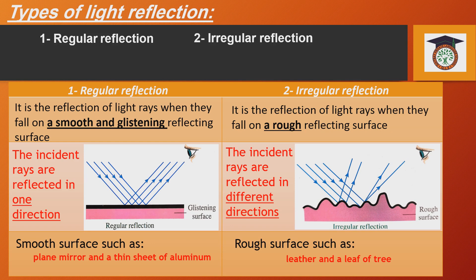So, to summarize, we have two types of reflection: regular reflection and irregular reflection. With regular reflection, we can see our images — such as the formation of our image on plane mirrors.